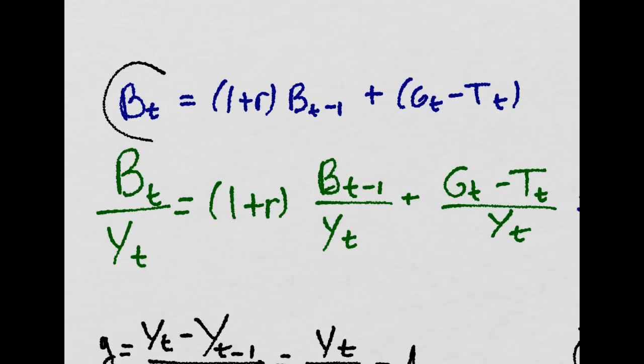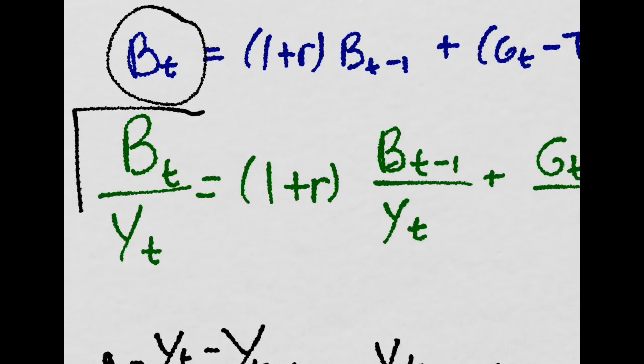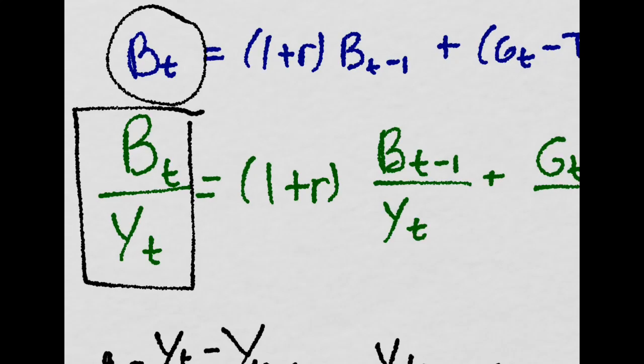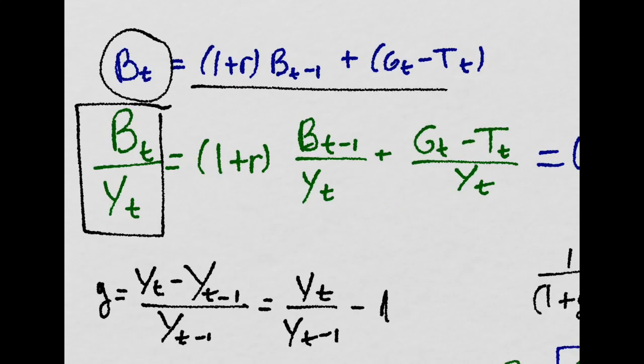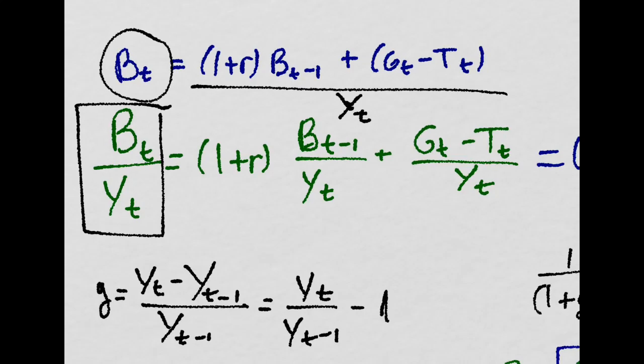The funny thing is that in the real world, we don't just use the level of debt. We actually use the debt over GDP ratio. That is, we divide this whole expression by the level of GDP at year T, and we get this.